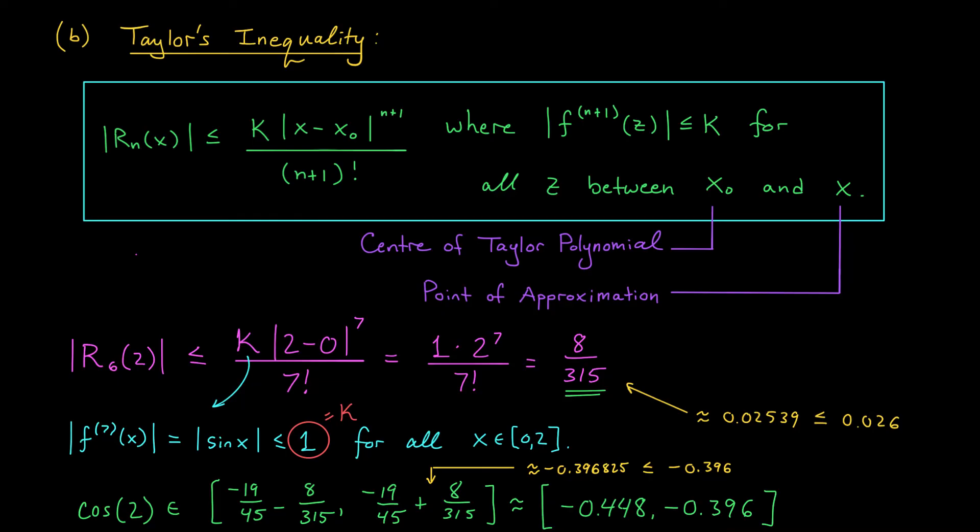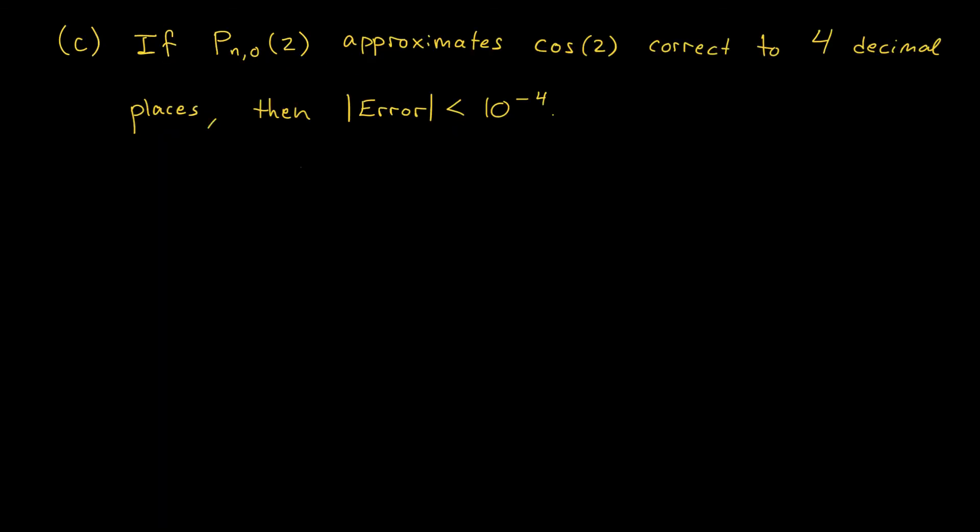This approximation that we found is okay, but maybe it's not quite good enough. The next question we're going to ask is, what degree do we have to get up to, to ensure that our approximation is correct to at least 4 decimal places? We'd now like to determine which of our Maclaurin polynomials, Pn,0, will correctly approximate cos(2) to at least 4 decimal places. Said a little differently, we want the size of the error in our approximation to be less than 10 to the minus 4. Well, I don't know the exact value of the error in my approximation, but I could probably find an upper bound for this term using Taylor's inequality. If I could then identify which n values make that upper bound less than 10 to the minus 4, well, those n's would certainly make my error less than 10 to the minus 4.